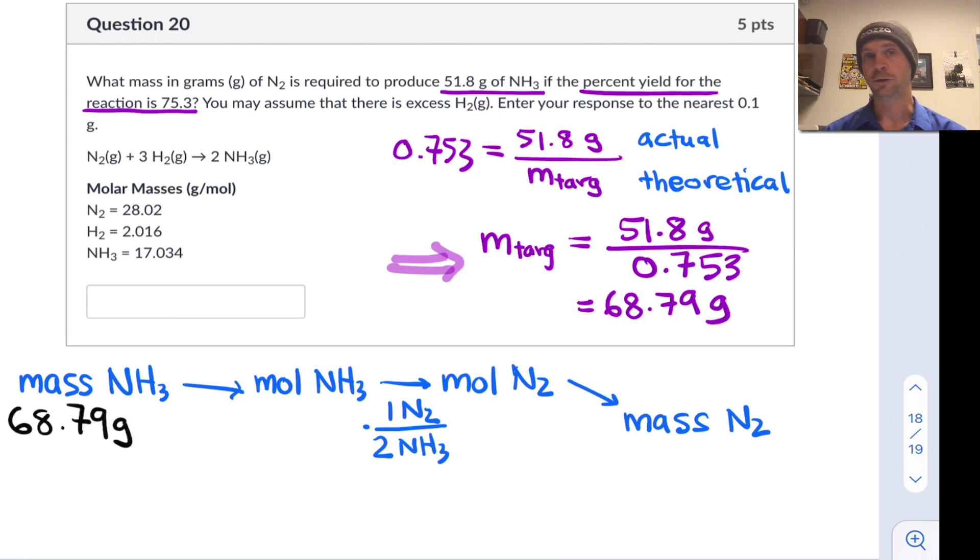Our target mass of NH3 is 68.79 grams. We're going to take that, divide by the molar mass of NH3, which is 17.034 grams per mole, or multiply by one mole for every 17.034 grams, multiply by that stoichiometric factor, and then multiply by the molar mass of N2, which is 28.02 grams per mole.